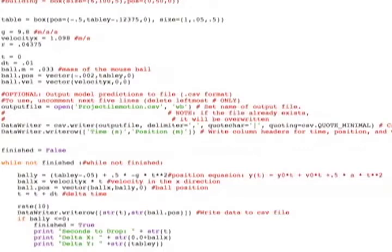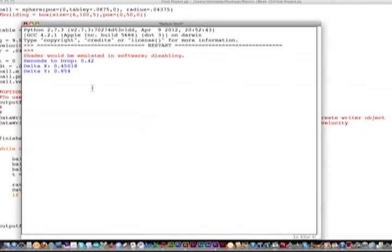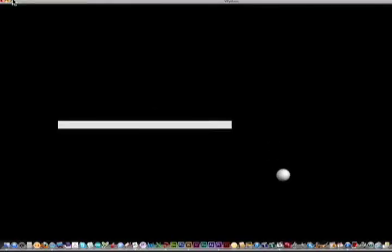The ball's position was updated and looped until the ball reached the floor. I added a statement to print out the time for it to drop, delta x, and delta y. After running the animation, it showed a parabolic motion, which is what I had expected it to resemble.